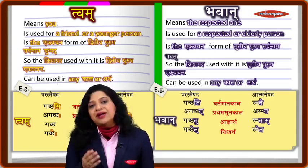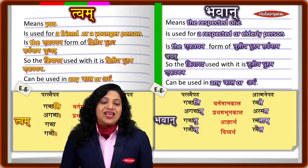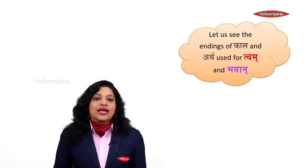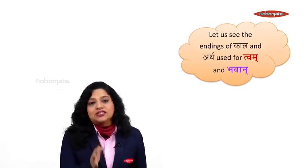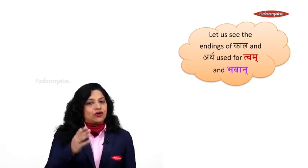So students, what we have seen here are different sentences for twam and bhavan. The forms for bhavan are: bhavan gacchati, bhavan agacchat, bhavan gacchatu, bhavan gacchet, and bhavan ramate, bhavan aramata, bhavan ramatam, and bhavan rameta. Now let us take a look at the endings of the kala and artha used for twam and bhavan on a comparative basis.